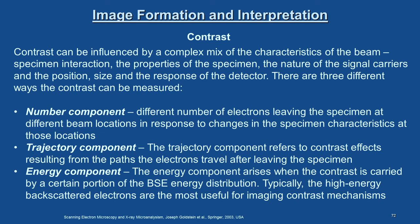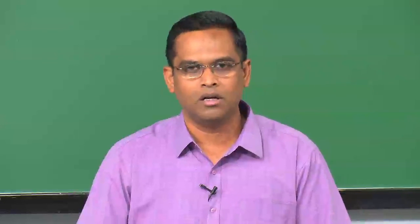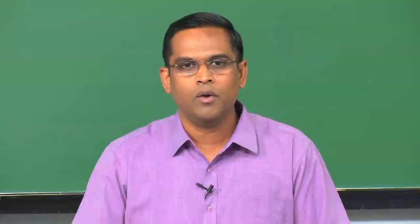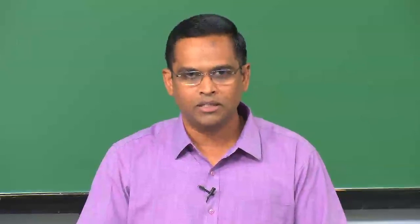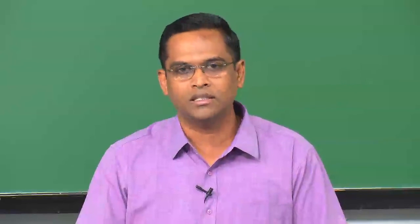These three components play a crucial role in contrast types. We talk about composition contrast — also called atomic number contrast or Z-contrast — and topographic contrast. These are the two primary contrast types. We will look at those contrast types in detail, how these three components contribute under different conditions, and how detector location and geometry influence them in the next class. Thank you.